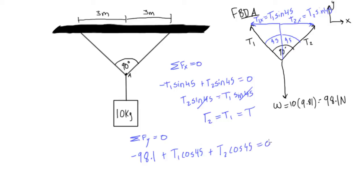This is definitely going to be equal to zero, and we know that t1 is equal to t2, so we can simplify this a little, we can say that negative 98.1 plus 2t cos 45 is equal to zero.